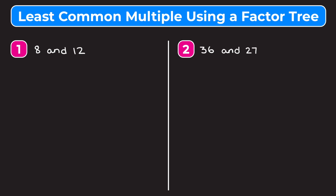Let's jump into example one: we want to find the least common multiple between 8 and 12. When using the factor tree method, we need to start by making a factor tree for each number. For 8, when making a factor tree you want to start by thinking of two factors of the number — but you don't want to use 1 and the number itself. So let's use 2 and 4, creating two branches: one is 2 and the other is 4.